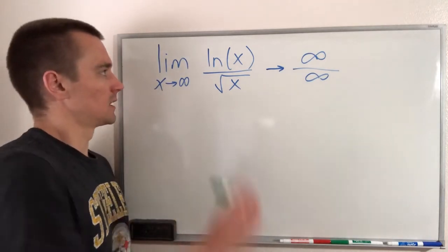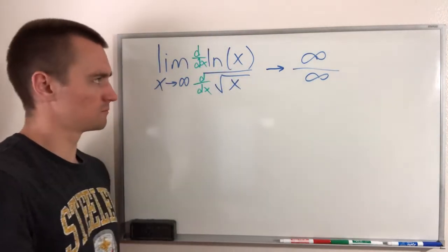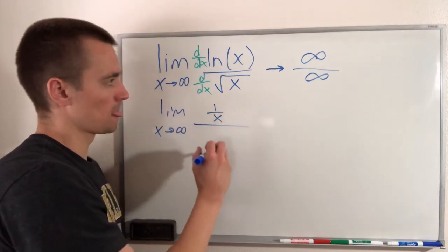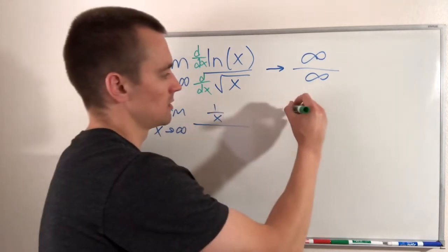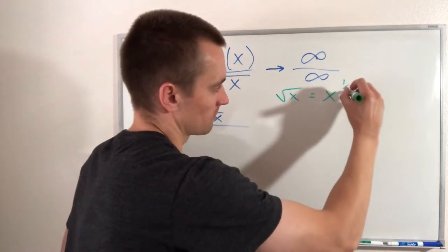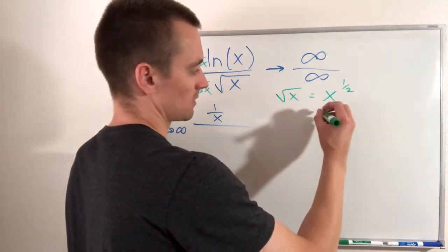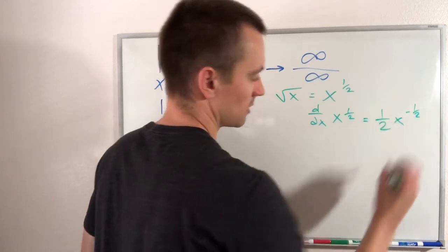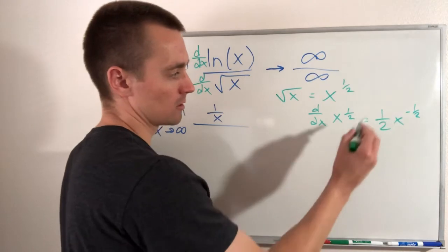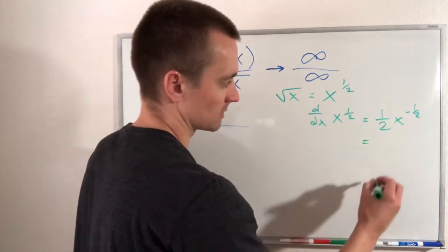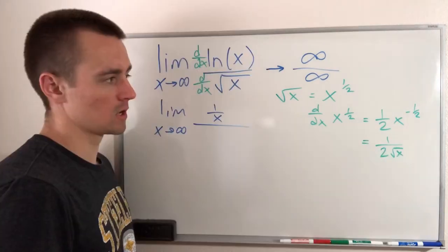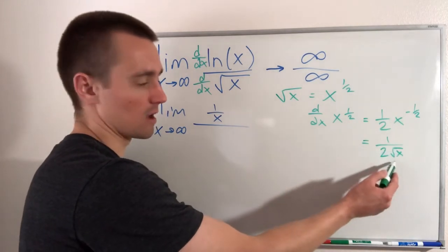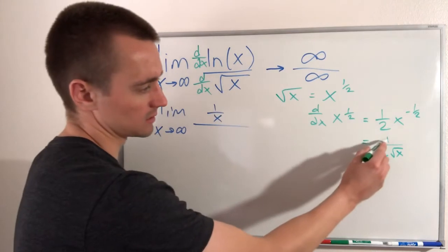So we know we can use L'Hôpital's rule to solve this. Doing that, we would just take the derivative of the top and the bottom with respect to x. That gives us the limit as x goes to infinity of 1 over x on top. For the derivative of square root of x, think of square root of x as x to the 1/2, so we use the power rule, which gives us 1/2 times x to the negative 1/2. Bringing the power down in front and lowering the power by 1, 1/2 minus 1 is negative 1/2. This is the same as 1 over 2 times the square root of x, since a negative exponent means it's in the denominator. So the derivative of square root of x is 1 over 2 root x.